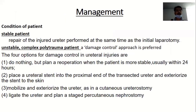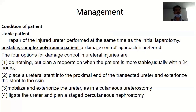According to the condition of the patient, if a patient is stable, repair of the injured ureter is usually performed at the same time as the initial laparotomy. In case of an unstable complex polytrauma patient, a damage control approach is preferred. There are four options for damage control in ureteral injury: do nothing and plan re-operation when the patient is more stable usually within 24 hours; place a ureteral stent into the proximal end of the transected ureter and exteriorize the stent to the skin; mobilize the ureter and exteriorize as a cutaneous ureterostomy; or ligate the ureter and plan a staged percutaneous nephrostomy.